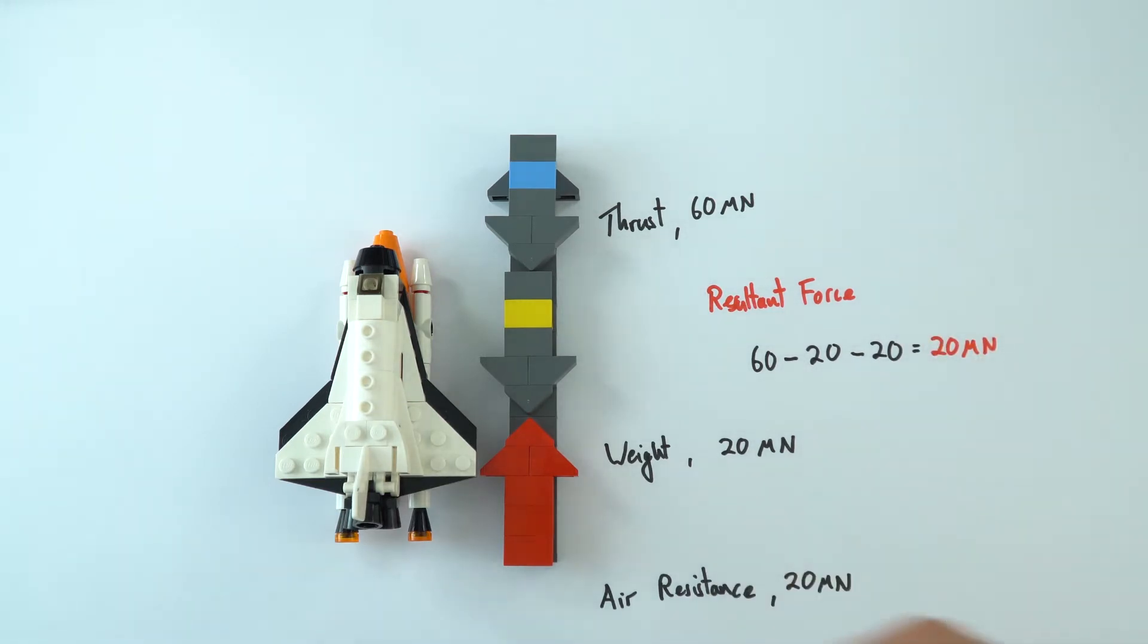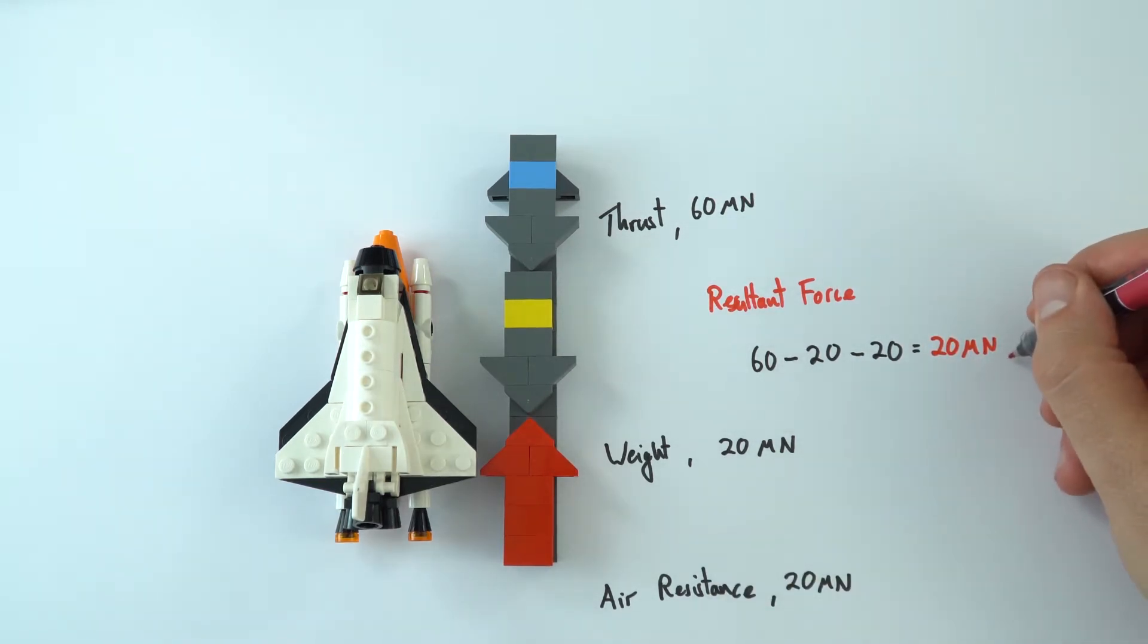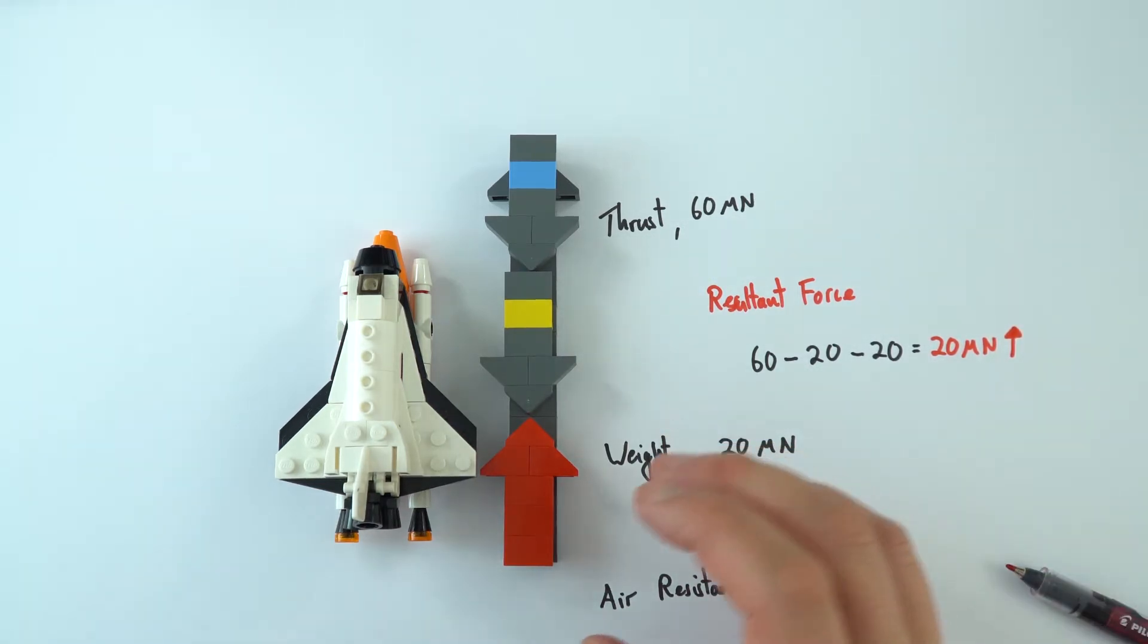And because force is a vector, we need to think about a direction as well. So I'm just going to put an arrow there to show that this is in the upwards direction. So that's what we really have when we talk about resultant force in an object.